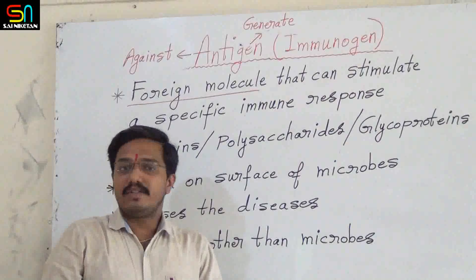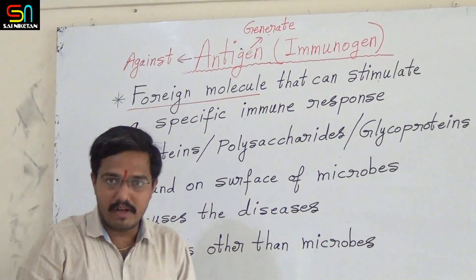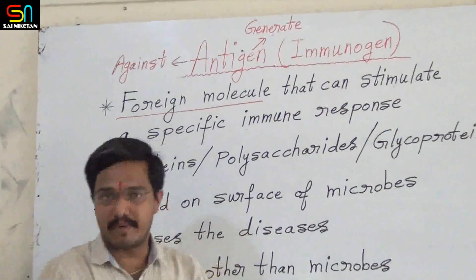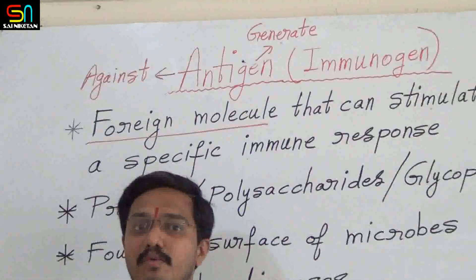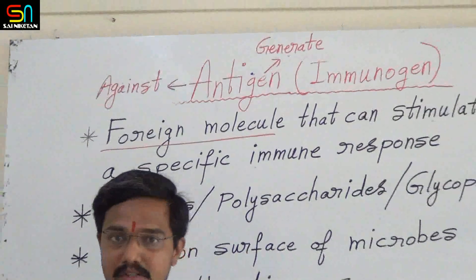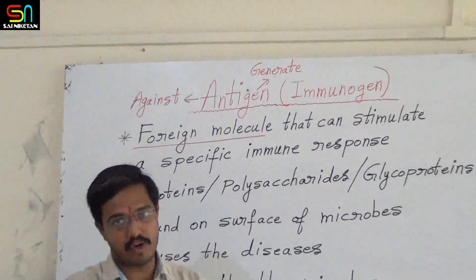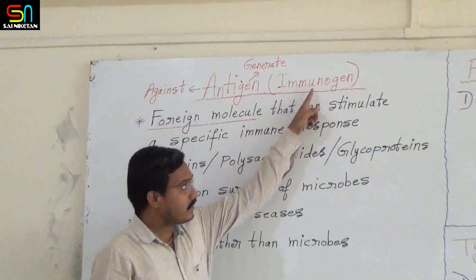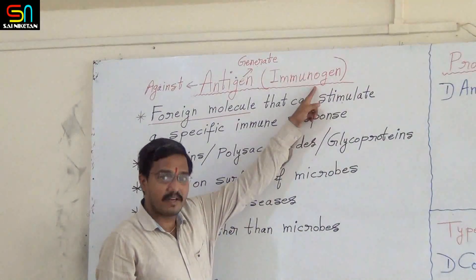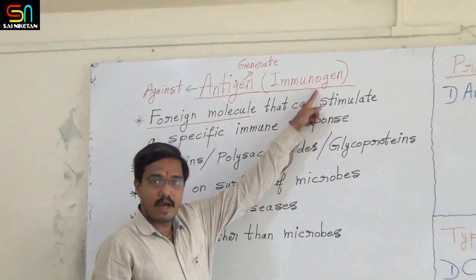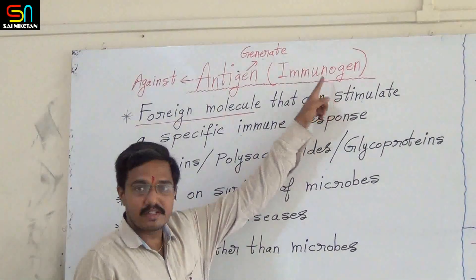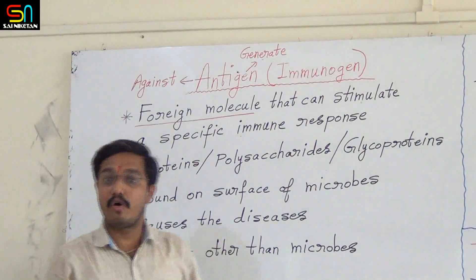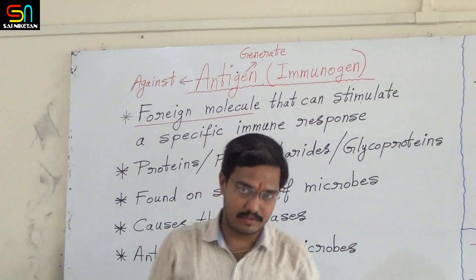Antigen is technically called an immunogen. This word you should remember — wherever you get the word immunogen, it is nothing but antigen. 'Immuno' means immunity, 'gen' means generate. So antigens generate immune response, hence they are called immunogens.